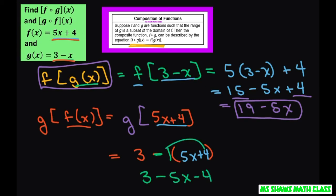You distribute that, so you're going to get -5x. And then 3 - 4 is -1. So that's your final answer for this one.